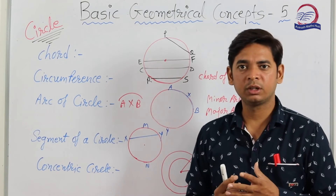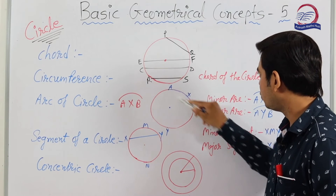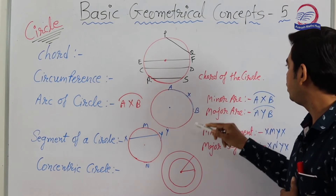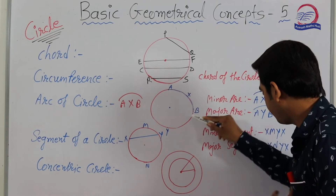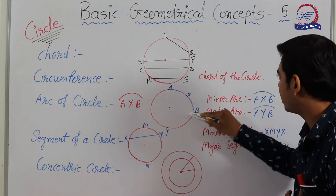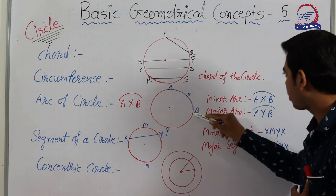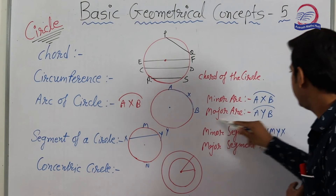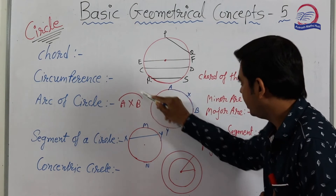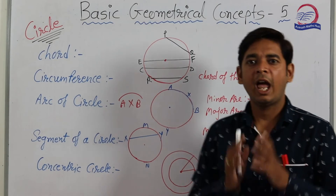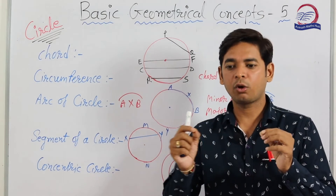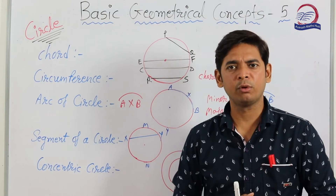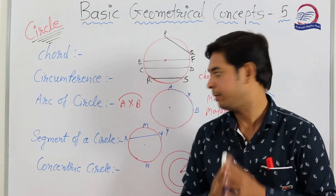Next: arc of the circle. If you take any two points on the circle, they divide the circle into two arcs — a minor arc and a major arc. AXB is the minor arc and AYB is the major arc. Think of a bangle: if you break it into small pieces, each small piece can be called an arc of the circle.